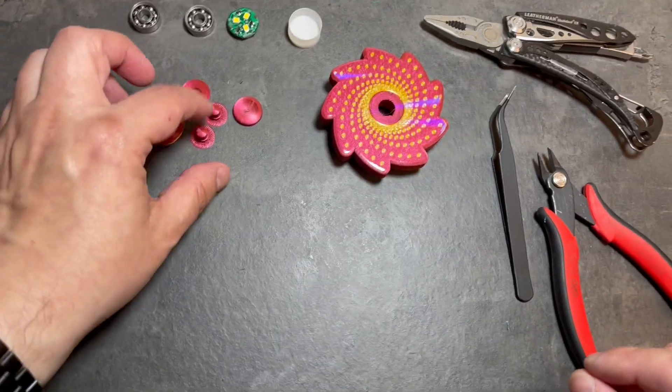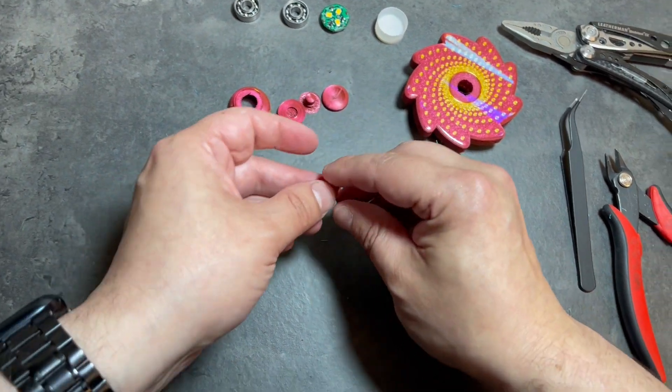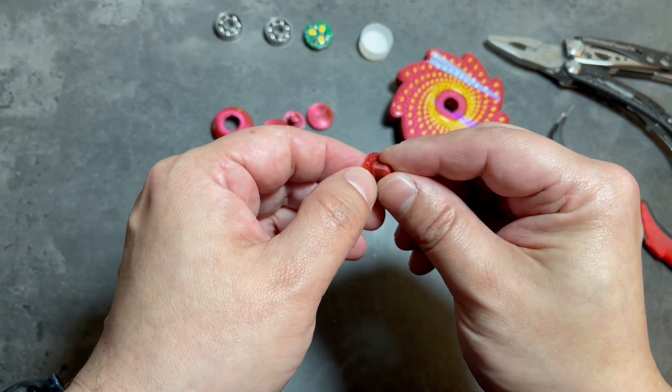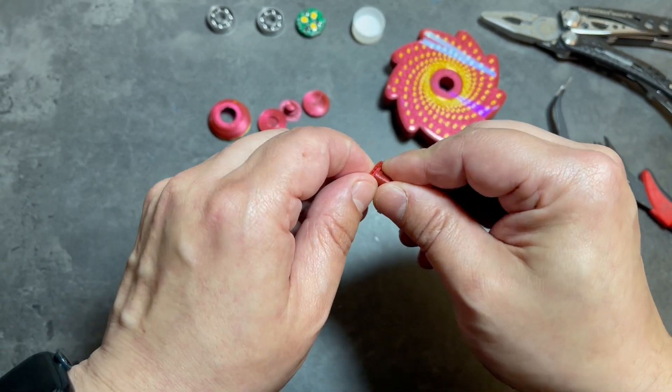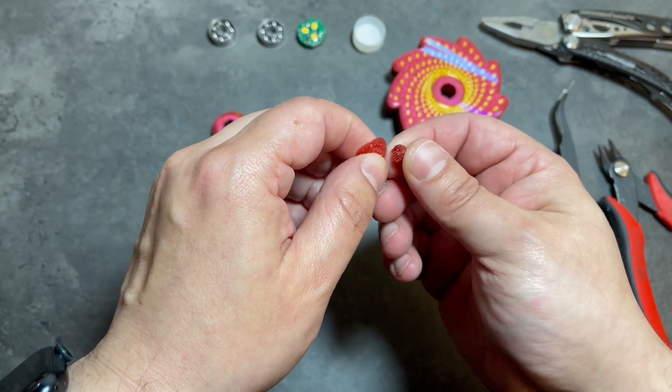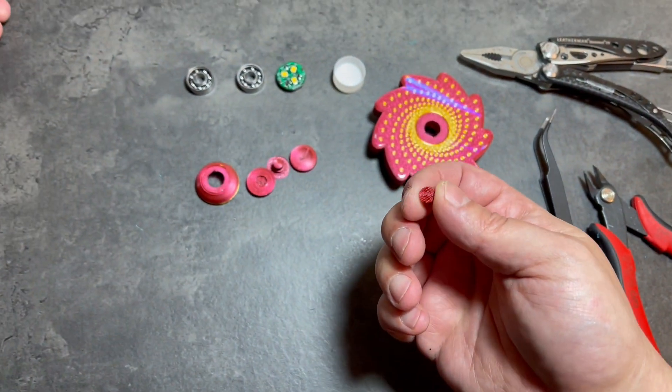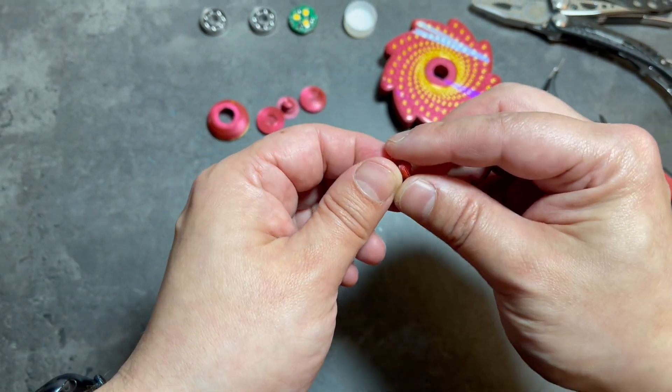All right, let's start with the hardest part, which tends to be the caps here, the buttons. I printed them on rafts to prevent the elephant's foot effect, because the tolerances are pretty sensitive, but it's still going to really depend on what kind of filament you use and how well it's calibrated. If it's too loose, glue it in. If it's too tight, you can trim it a little, and if needed, glue it.